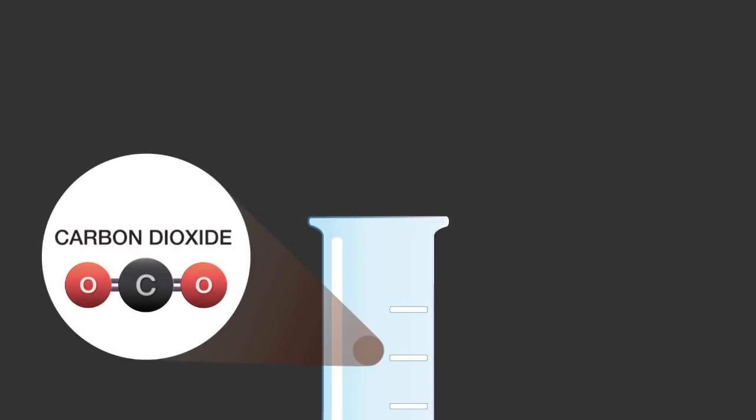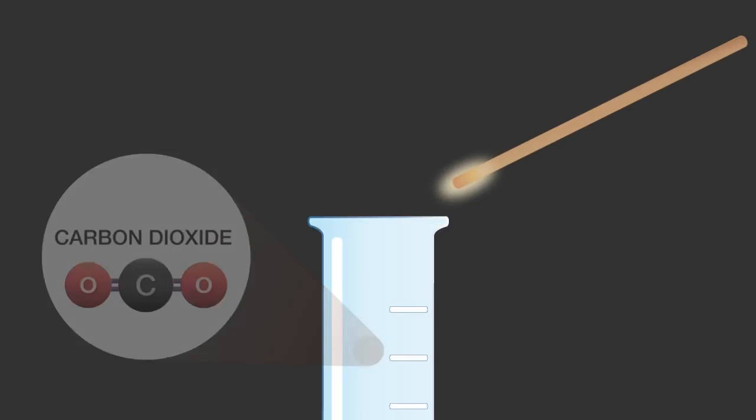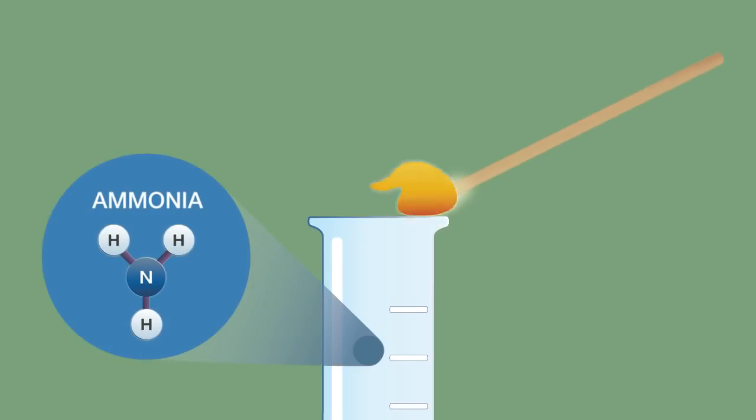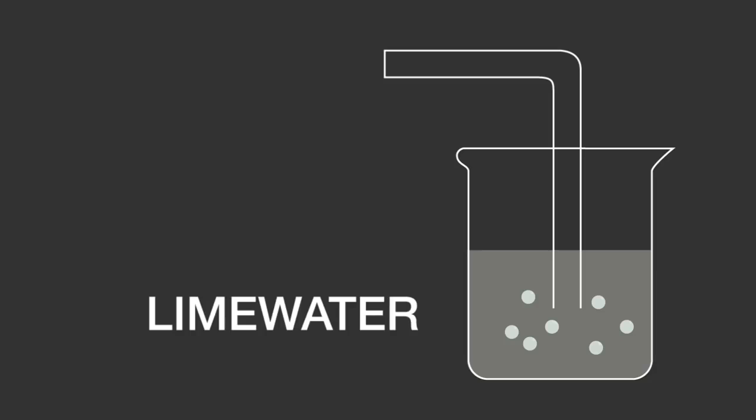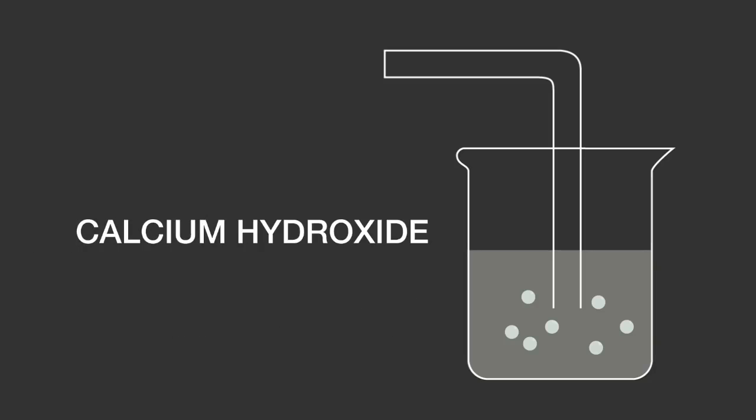Carbon dioxide will extinguish a lit splint, but the same occurs in the presence of ammonia. A more accurate test is to bubble carbon dioxide through lime water, which is an aqueous solution of calcium hydroxide.